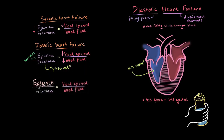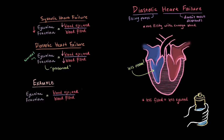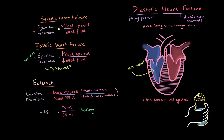Ejection fraction is equal to your volume ejected — which you could also call your stroke volume — divided by the total blood filled, which we can also call end diastolic volume, because it's the volume at the end of diastole. So say your stroke volume is 70 milliliters and your end diastolic volume is 120 milliliters. This would be considered healthy. 70 divided by 120 equals 58%, which is within a normal range.